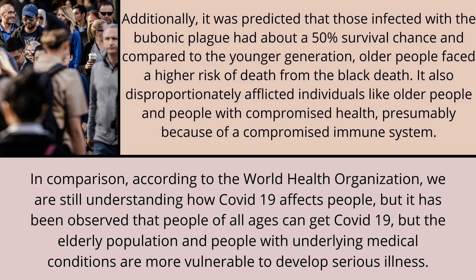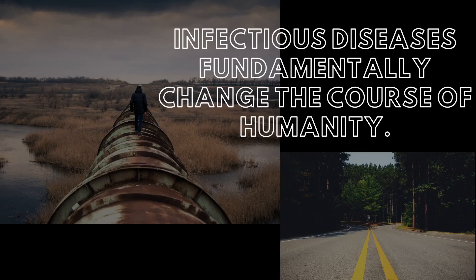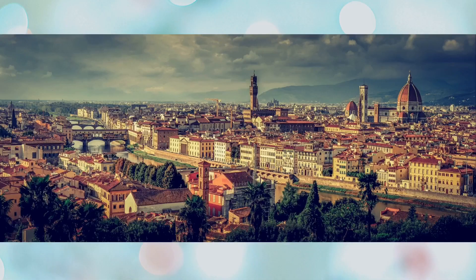The Black Death also disproportionately afflicted older people and those with compromised health, presumably because of a compromised immune system. In comparison, according to the World Health Organization, we are still understanding how COVID-19 affects people, but it has been observed that people of all ages can get COVID-19, though the elderly and people with underlying medical conditions are more vulnerable to developing serious illness. As Dr. Snowden describes in his book Epidemics in Society from Black Death to the Present, infectious diseases fundamentally change the course of human history by altering politics, economy, and everything to come thereafter.